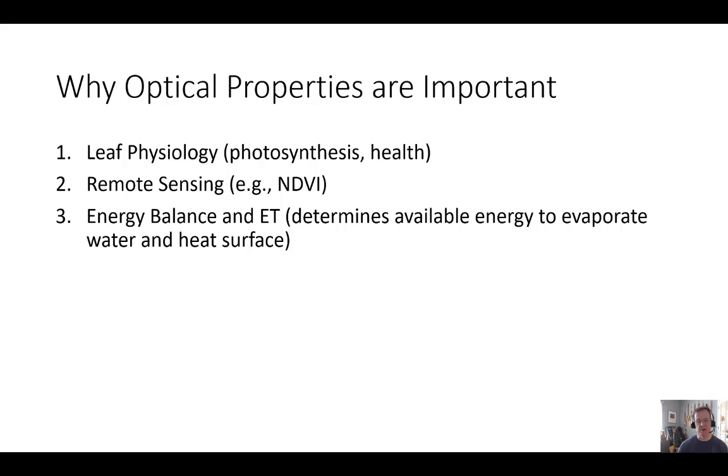Optical properties of the surface are really important in remote sensing at all scales—handheld devices, drones, aircraft, helicopters, or satellites. Remote sensing is really sensing the optical properties of the surface and correlating that with some other parameter we're interested in, like yield or leaf area.